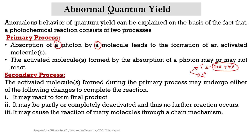The secondary process involves what happens to the activated molecule. The first possibility is that it may react to form a final product. Or it may be partly or completely deactivated, and thus no further reaction occurs. Or it may cause the reaction of many molecules through a chain mechanism. If the activated molecule directly gives the final product, the quantum yield becomes 1. If it is deactivated, the quantum yield is less than 1. If it causes many molecules to react, the quantum yield is greater than 1.